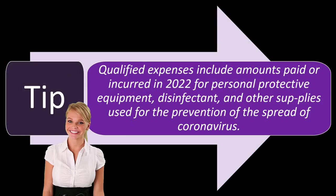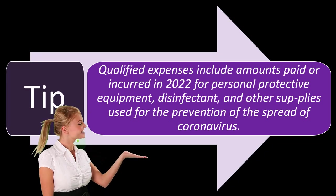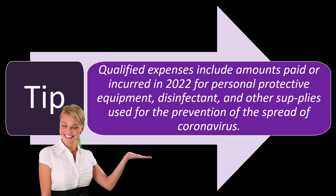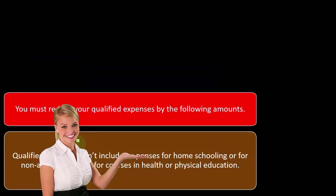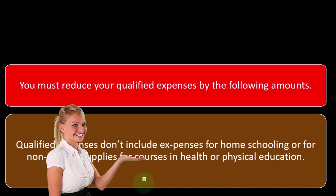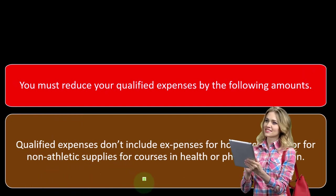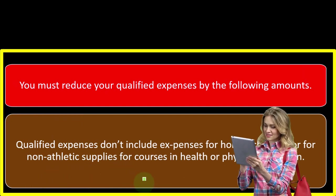They didn't actually increase the threshold — they just said you know, sanitary supplies count. Most teachers probably already hit the threshold anyway. Qualified expenses do not include expenses for homeschooling or for non-athletic supplies for courses in health or physical education.